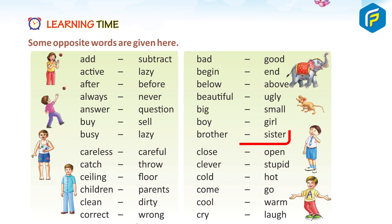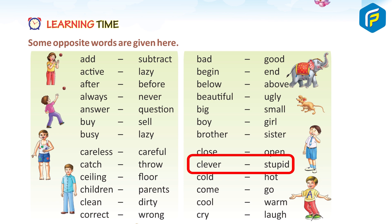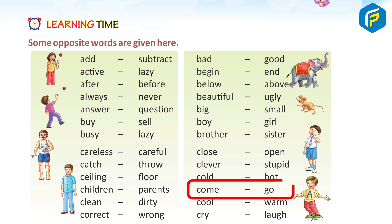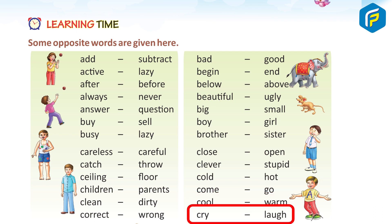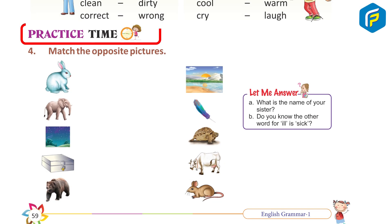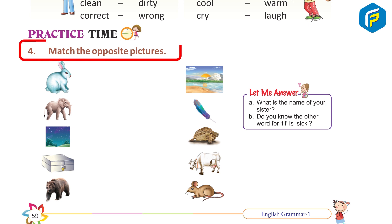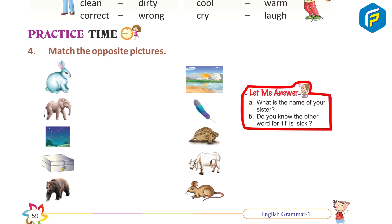Brother/sister, close/open, clever/stupid, cold/hot, come/go, cool/warm, cry/laugh. Practice time: match the opposite pictures. A — what is the name of your sister? B — do you know another word for this?